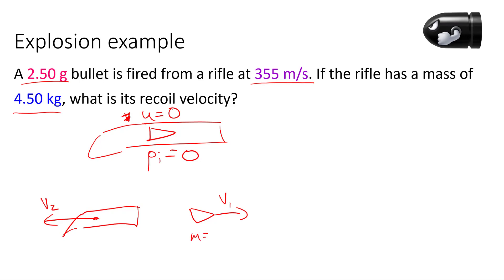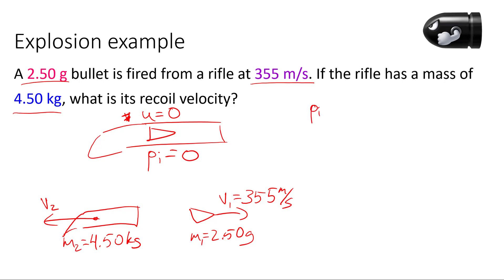The bullet has a mass of 2.50 grams and M2, the rifle, is 4.50 kilograms. The bullet has a speed of 355 meters per second. Using conservation of momentum, since the initial momentum is zero: 0 = M1·V1 + M2·V2.